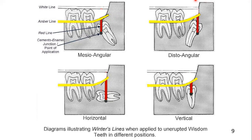This is the amber line. From the amber line, you draw this imaginary red line perpendicular down to the point of application of the elevator. The point of application depends on the tooth angulation: for a mesioangular tooth it is on the mesial side; for a distoangular tooth it is on the distal side; for a horizontal tooth it is downward; and for a vertical tooth it is on the buccal side.